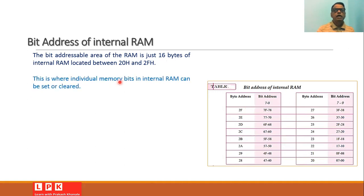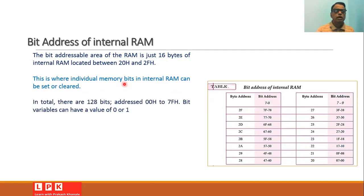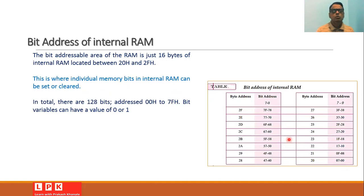This is where individual memory bits in the internal RAM can be set or cleared. In total there are 128 bits, and these bits are addressed from 00 to 7Fh. Bit values can be set to either 0 or 1, since each individual bit can hold a value of 0 or 1.